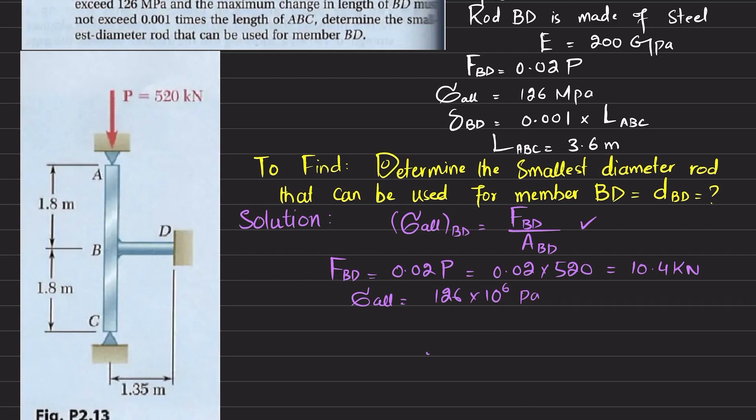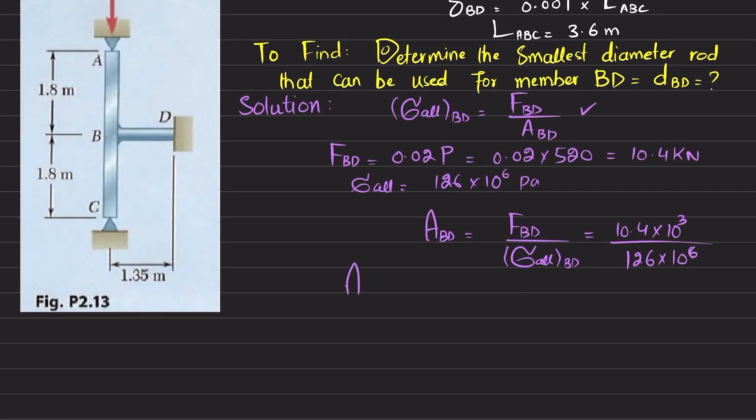So from using this equation, area of BD is equal to force in BD divided by allowable stress in BD. So this is 10.4 into 10 to the power 3 Newton divided by the allowable stress is 126 into 10 to the power 6. When you calculate, you will get area of BD will be equal to 0.000008253 square meter. Now, this is the area that is calculated based on allowable stress.